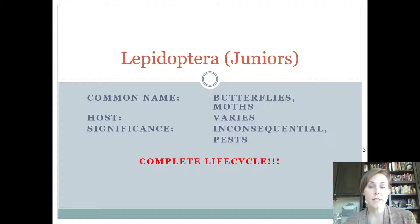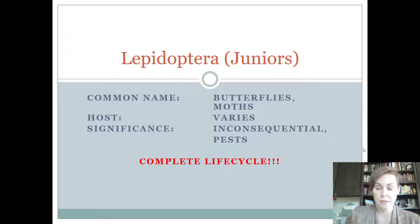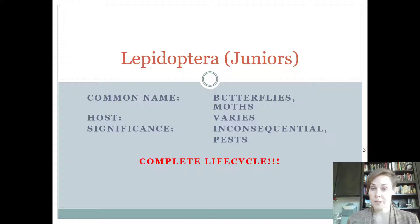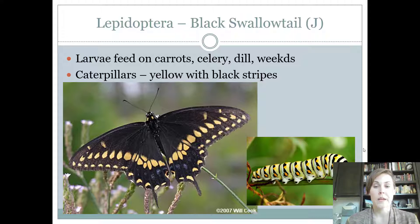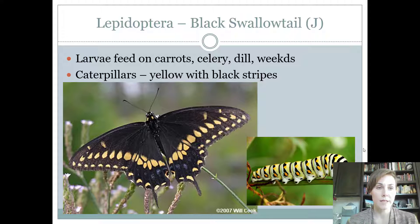The host on these guys is going to vary. Their significance ranges from inconsequential to beneficial to a pest — it just depends on exactly what you're looking at. These guys have a complete life cycle, which is easy to remember because we learn in school about the life cycle of a butterfly: the mother lays an egg, the egg hatches into the caterpillar which is the larva, then the larva becomes the pupa, and then it becomes the adult butterfly form that we recognize.